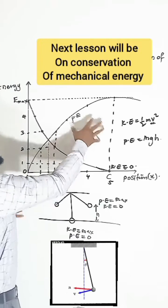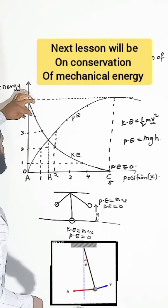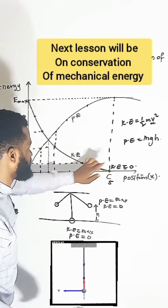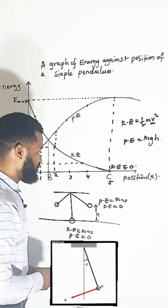So if you look at this very well, many things are happening. This is the graph which represents it. This curve is representing the kinetic energy. This curve is representing the potential energy.